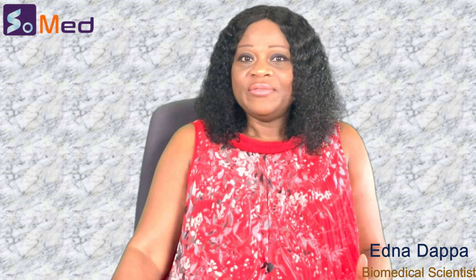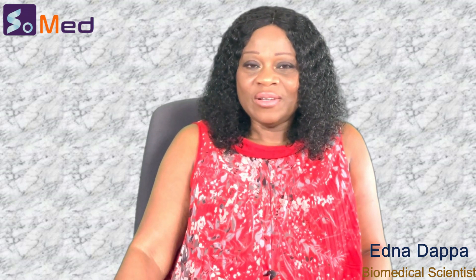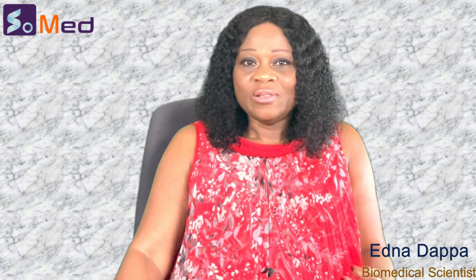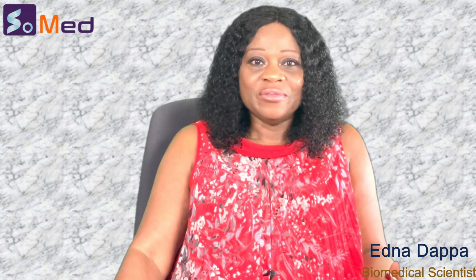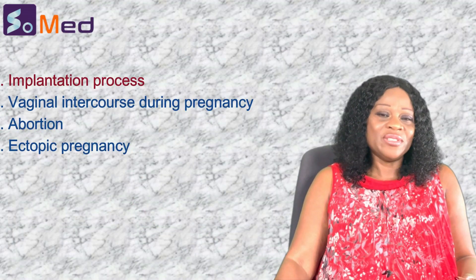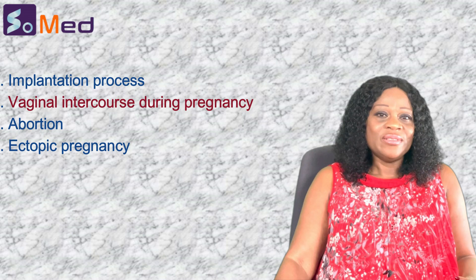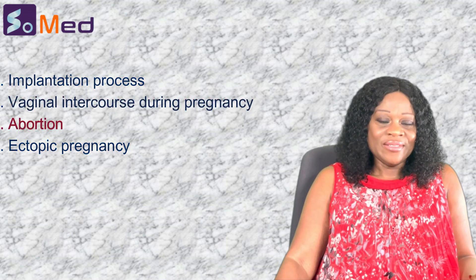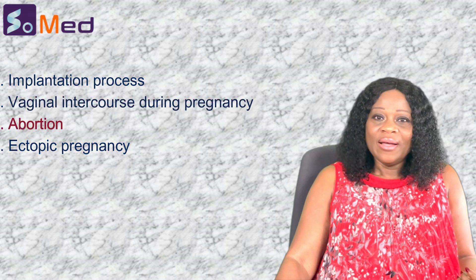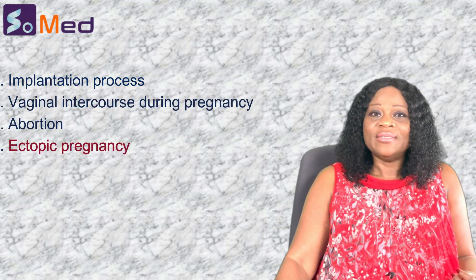In this video, I will be talking about four processes that could cause abnormal vaginal bleeding. They are: the implantation process, vaginal intercourse during pregnancy, abortions, and ectopic pregnancy.